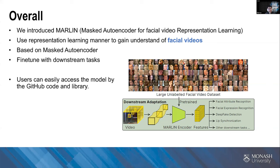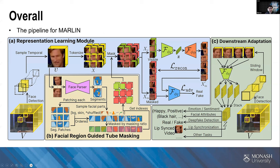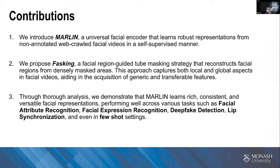With a smaller dataset, the model can be adapted to facial-related tasks like facial attribute recognition and expression recognition. The trained encoder can be used to extract features for any in-the-wild facial video and used for downstream tasks such as deepfake generation and detection. The pipeline for MARLIN has three parts: representation learning for pre-training, the facial region guided masking we call 'FASKing' as a novel masking strategy, and downstream adaptations for transfer learning.